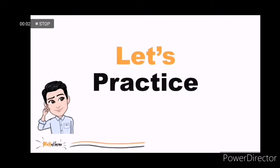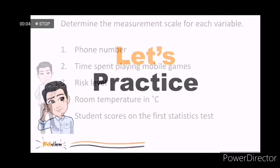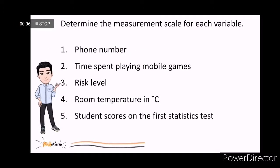Now, let us try applying those concepts by determining the measurement scale for each variable. You can pause the video if you like. Number 1: Phone number is just nominal like an email address. Though represented by numerical figures, it can't be ranked nor can you perform arithmetic operations.